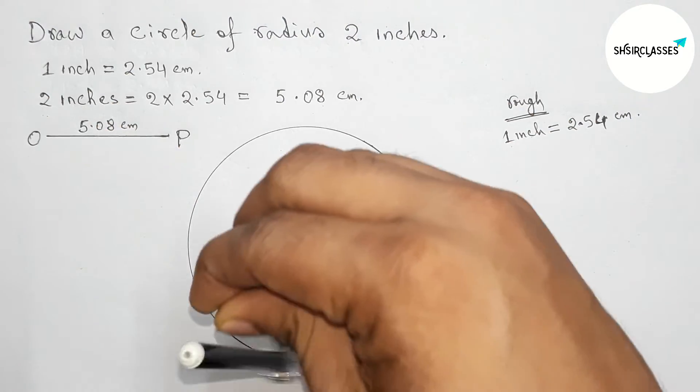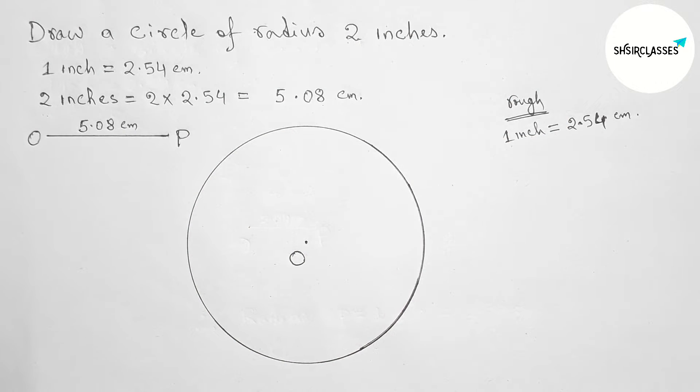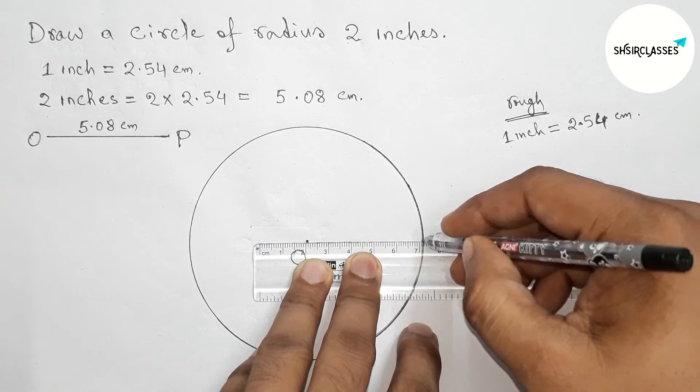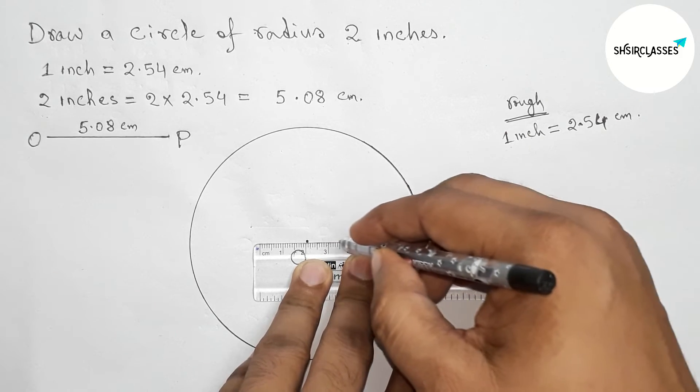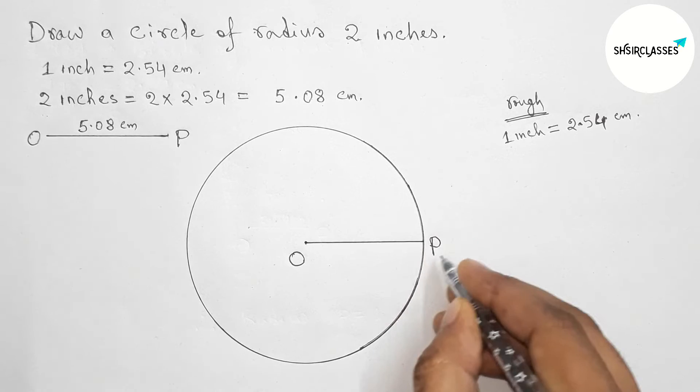This is a perfect circle of radius 2 inches or 5.08 centimeters, approximately 5.1 centimeters. Now joining the radius from the circumference to the center O, taking point P.